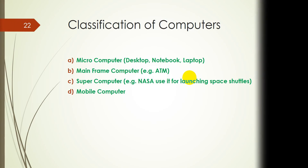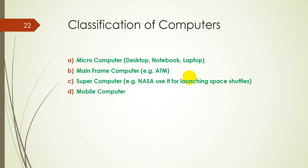Dear students, today's class is speaking about classification of computers. The four types are: first, the microcomputer; second, the mainframe computer; third, the supercomputer; and fourth, the mobile computer.